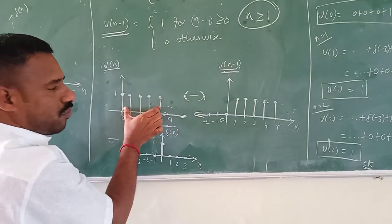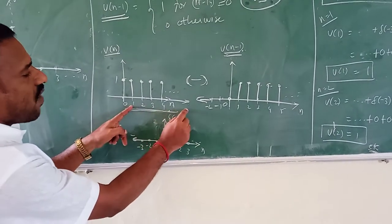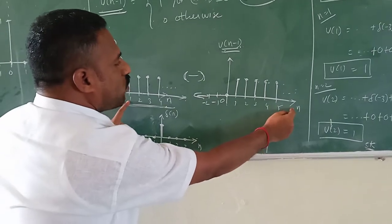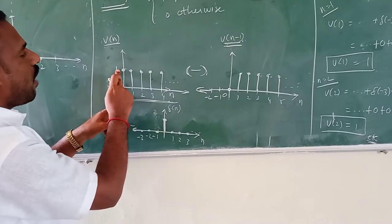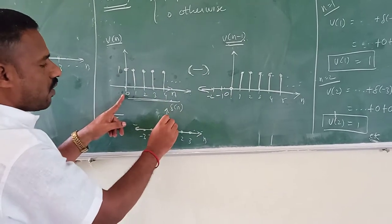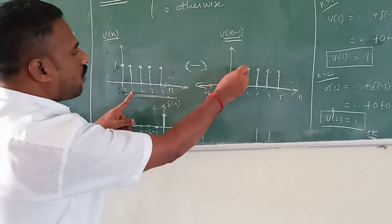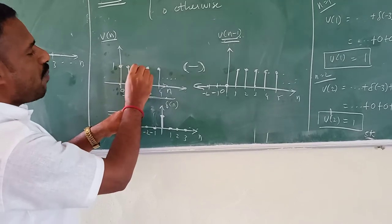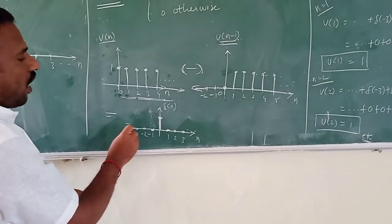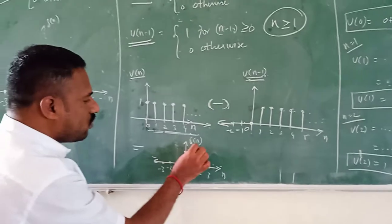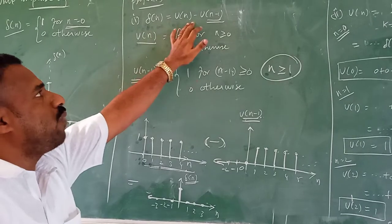Now we subtract: u of n minus u of n minus 1 graphically. In u of n, all integers have unit amplitude 1. In u of n minus 1, all integers from 1 onward have amplitude 1. For n equal to 0, u of n has amplitude 1 and u of n minus 1 has amplitude 0, so 1 minus 0 gives 1. For n equal to 1 and beyond, amplitude is 1 minus 1, giving 0. On the negative side, values are already 0. So del of n is the unit amplitude signal at n=0 only, satisfying del of n equals u of n minus u of n minus 1.